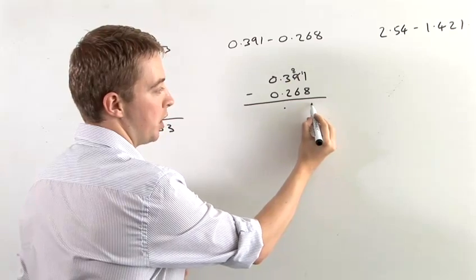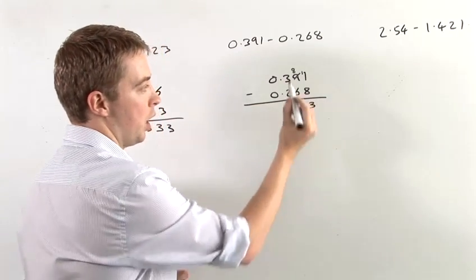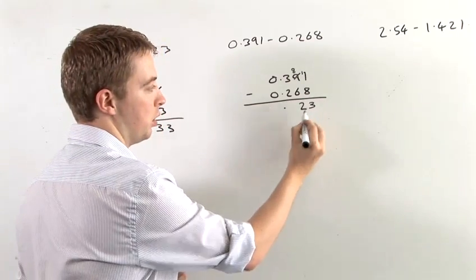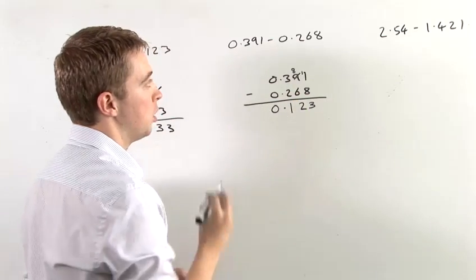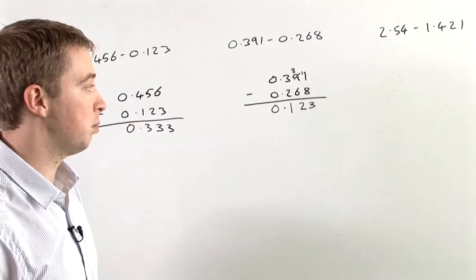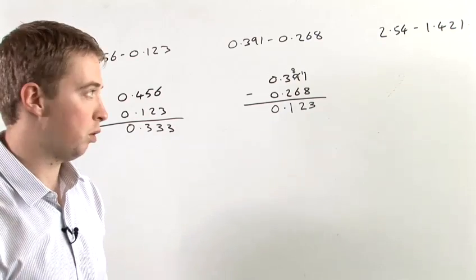So 11 minus 8 is 3, 8 minus 6 is 2, and 3 minus 2 is 1. So 0.391 minus 0.268 gives you 0.123.